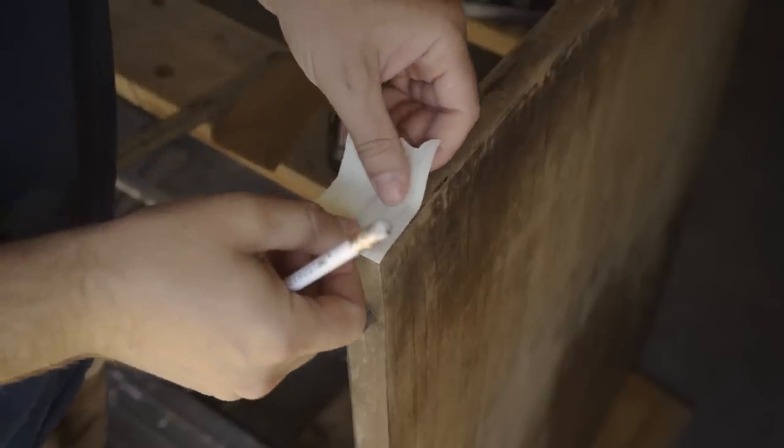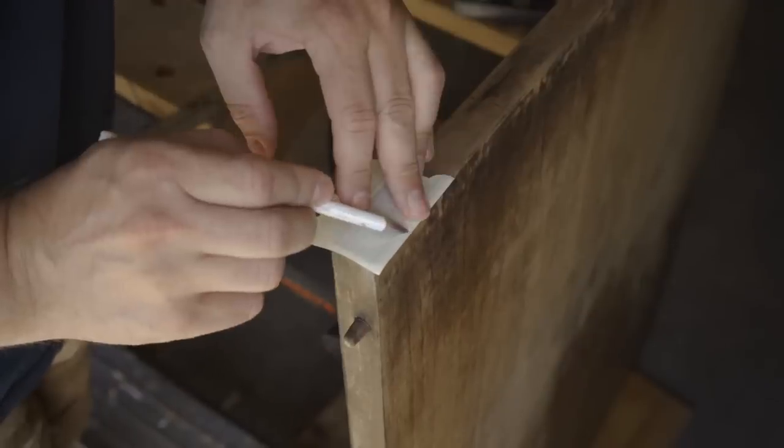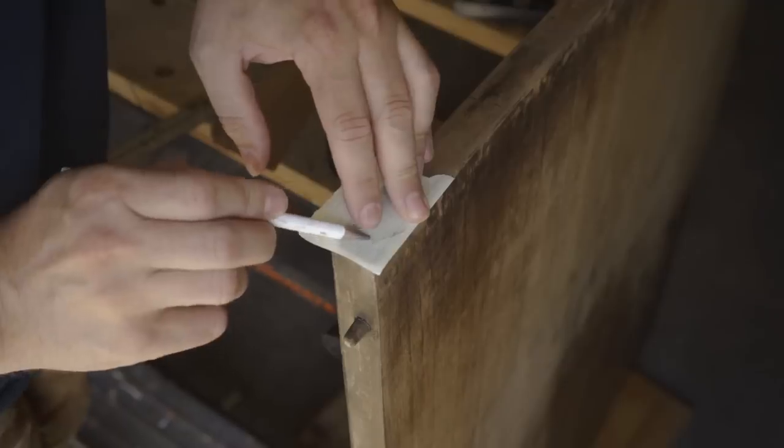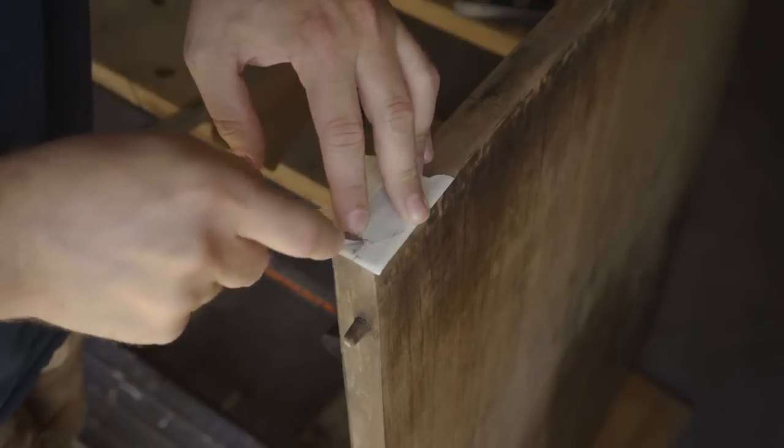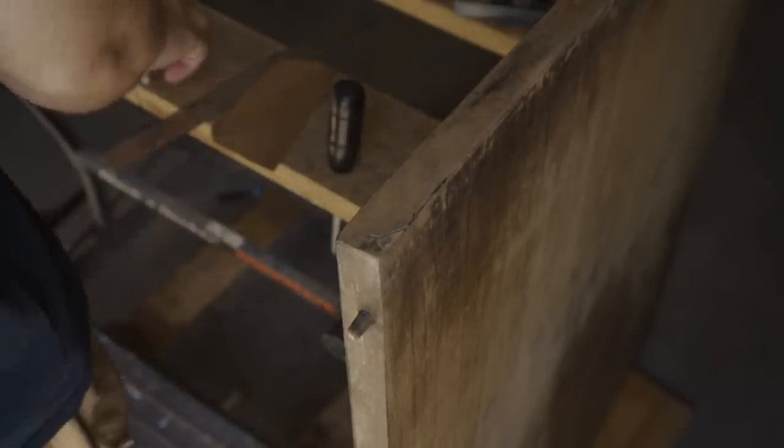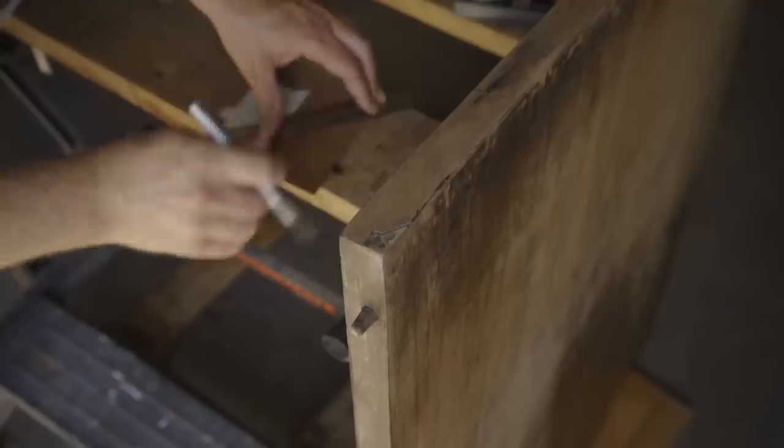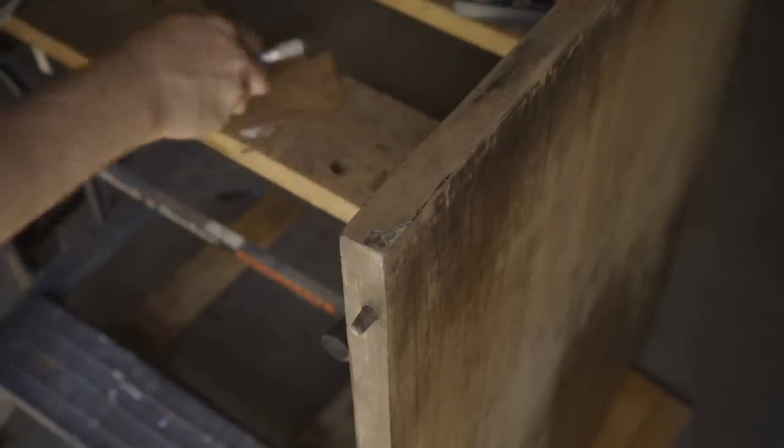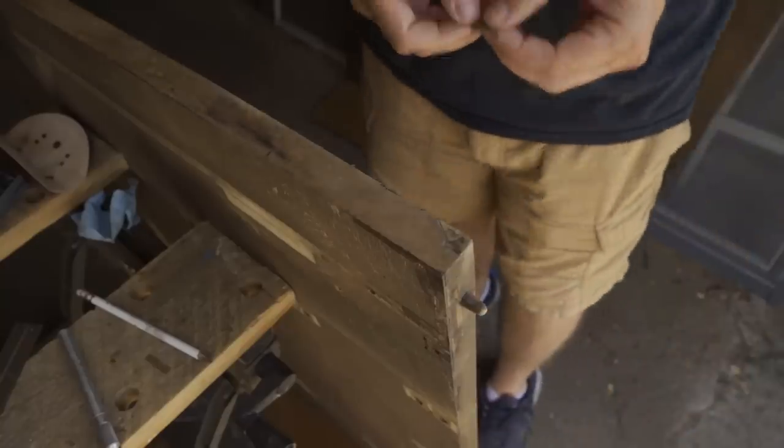And then I did some repairs where the veneer was chipped away. Here I'm tracing out the spot where the veneer is missing. And then I put that piece of paper on a new piece of veneer and cut out a patch and then glued it in.